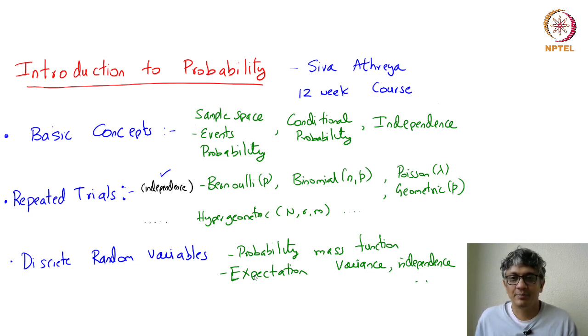And then as limiting concepts, the Poisson distribution automatically appears. Then once we do this, we will increase the notion of dependency in two trials. Then the hypergeometric will appear naturally.